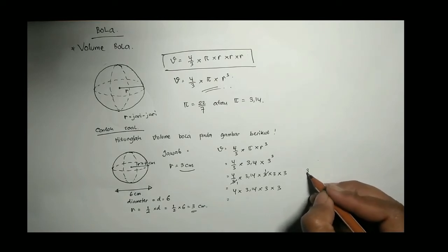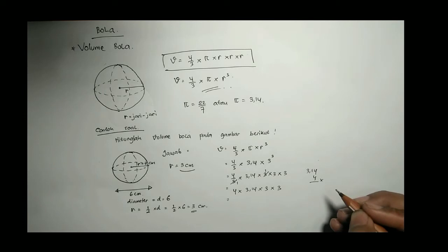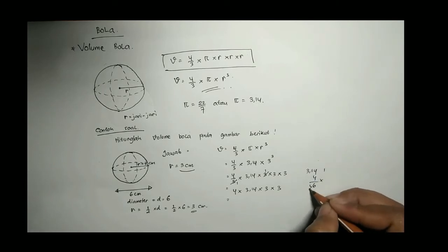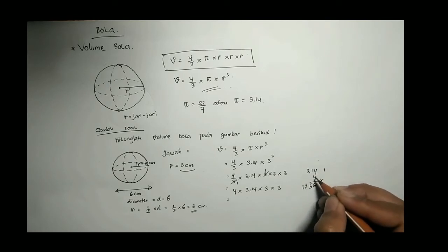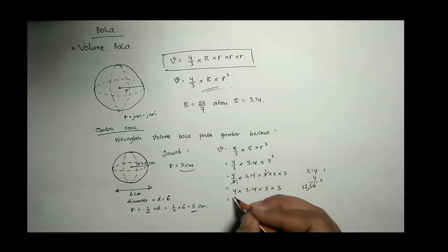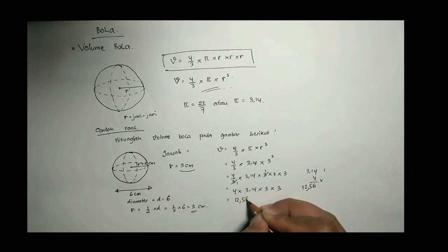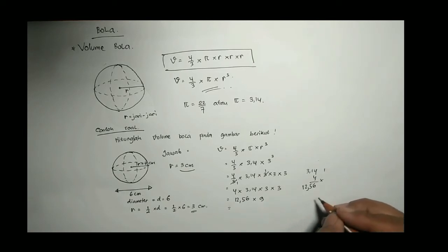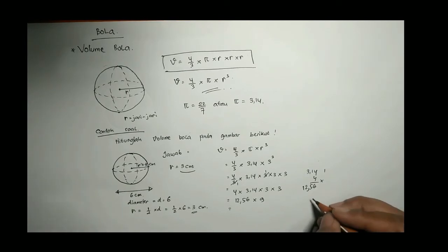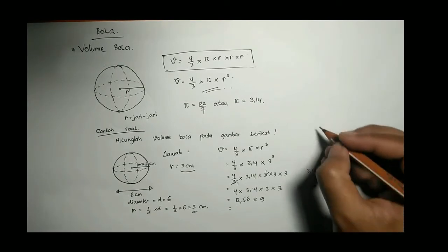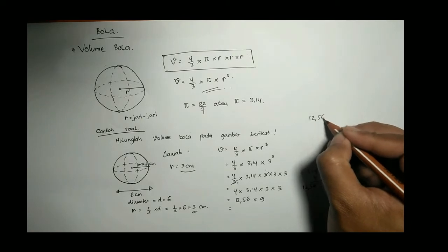Sehingga kita hitung bersusun ya. 3,14 kali 4, ingat di semester 1 kita sudah belajar menghitung pecahan desimal ya. Jadi kita abaikan dulu komanya, ini 1256. Karena 3,14 berarti hasilnya ada 2 angka setelah koma, jadi 12,56.